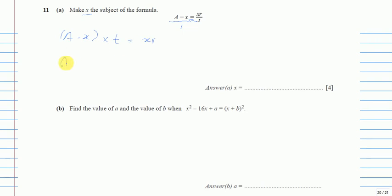When I open the bracket, I will have at - xt equals xr. Now, because x is the subject of the formula, I want x on one side and the other variables on the other side. So I will take this negative xt to the right hand side; on the left it is negative, on the right it will be positive.